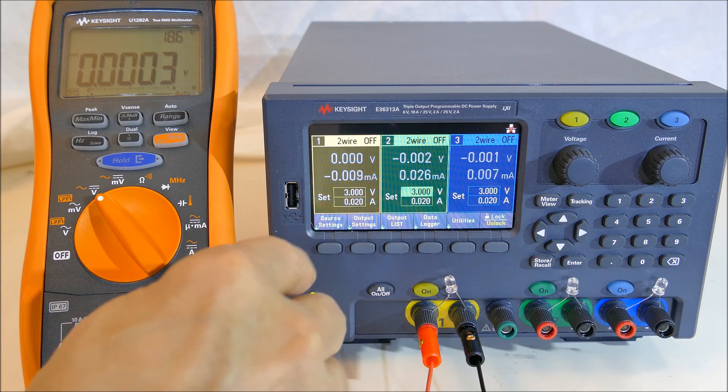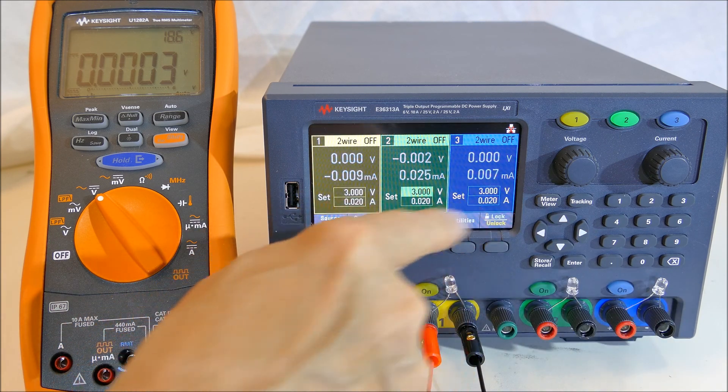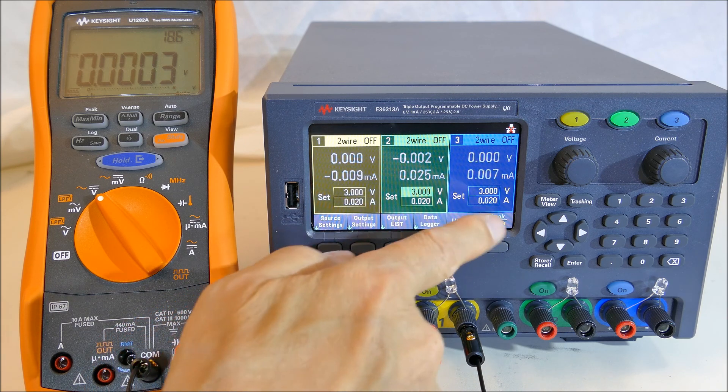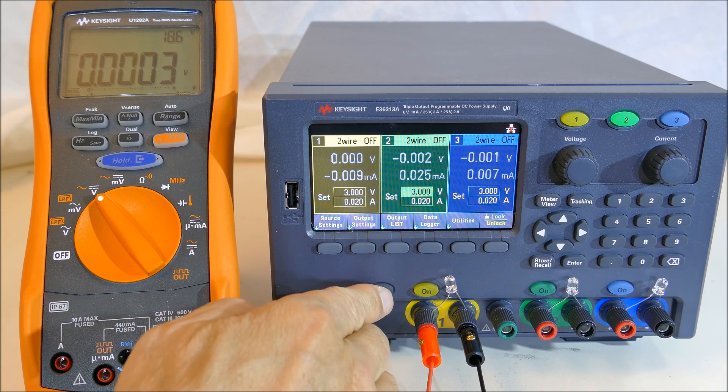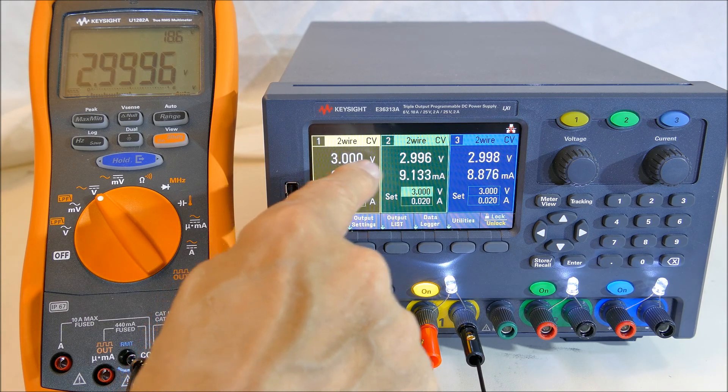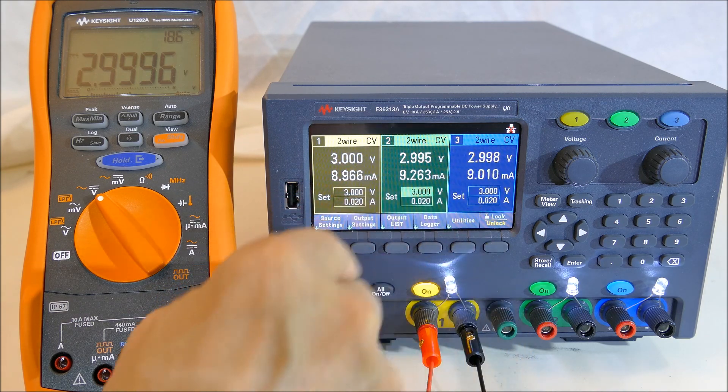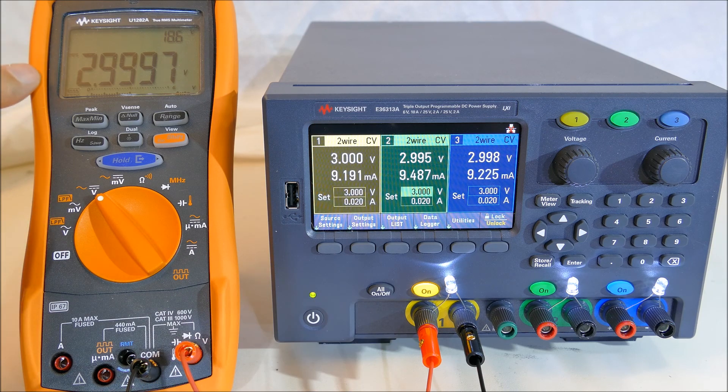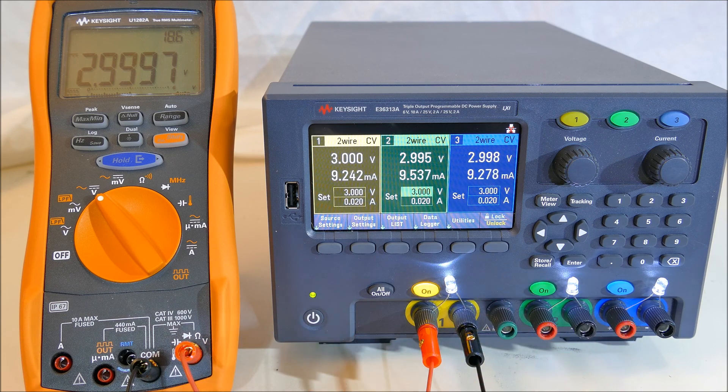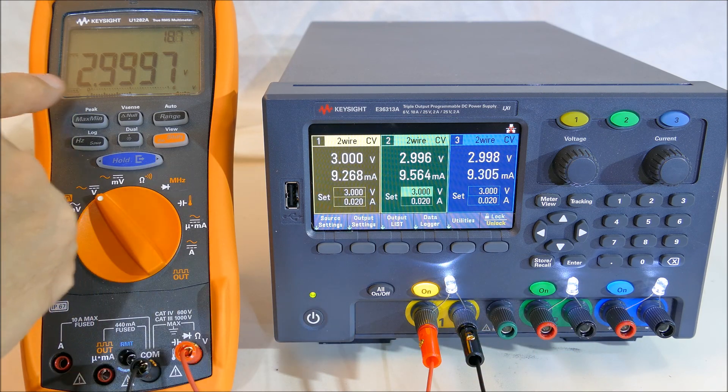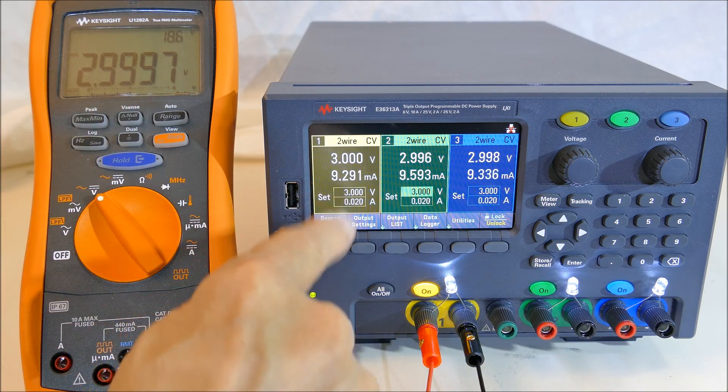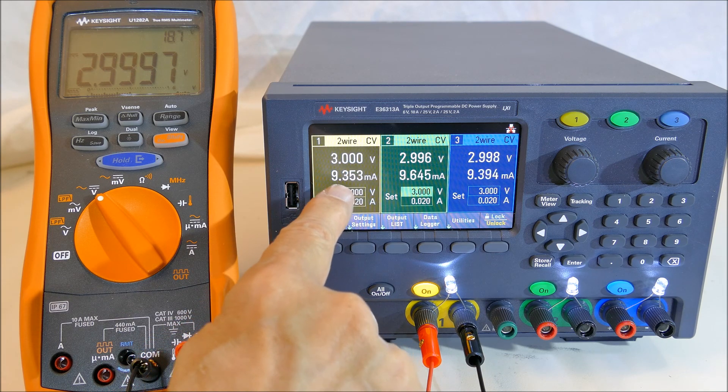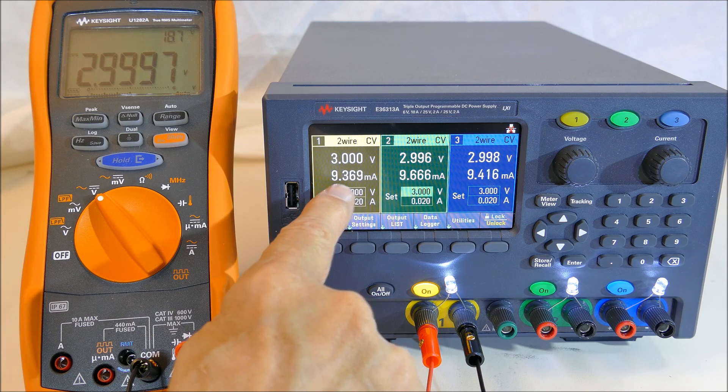So now if I turn it on, the power supply should supply each of these with 3 volts with a maximum of 20 milliamps. You can see they're all very close to 3 volts. The Keysight digital voltmeter is confirming this voltage is very close to 3 volts. That's the set voltage. Note they're all just taking about 9 milliamps.